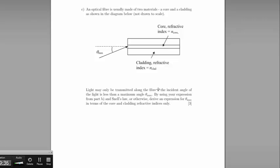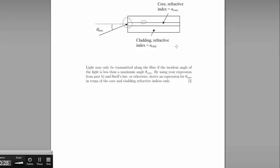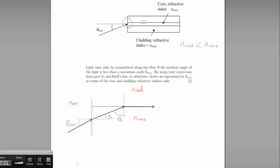Part C gives us an optical fibre, usually made of two materials — a core and a cladding. Light may only be transmitted along the fibre if the incident angle is less than a maximum angle theta max. There are two refractions occurring: refraction as light enters the glass, and total internal reflection at the boundary between the core and cladding. For total internal reflection to occur, the refractive index of the cladding, N clad, must be less than that of the core, N core.